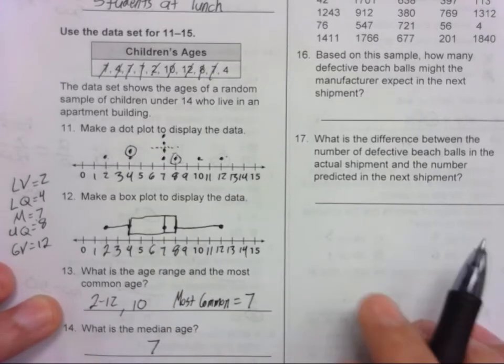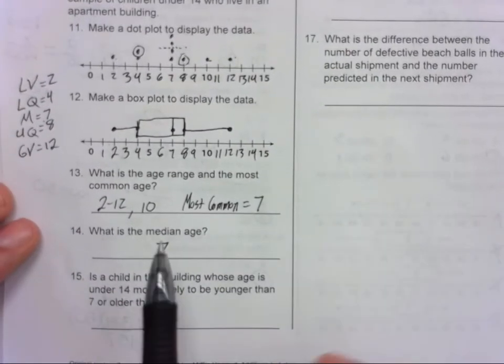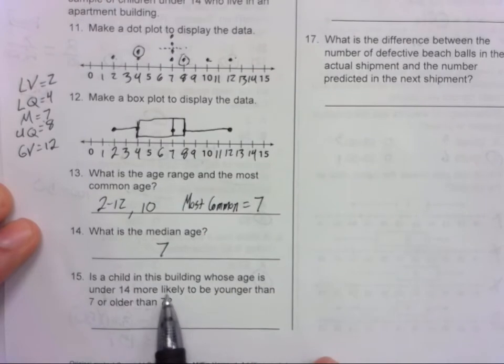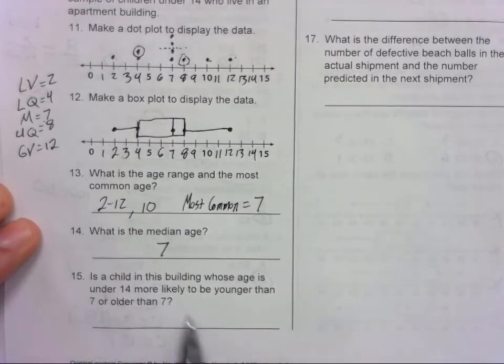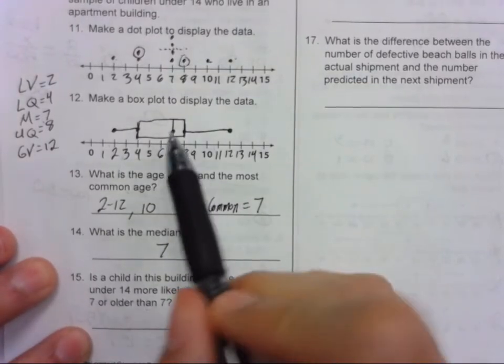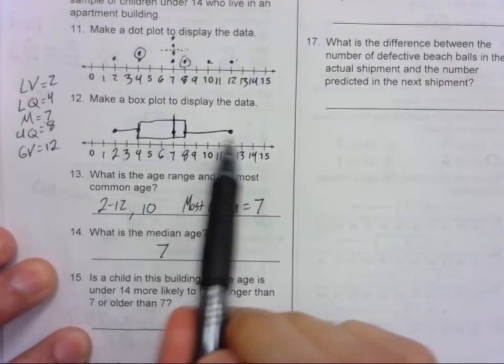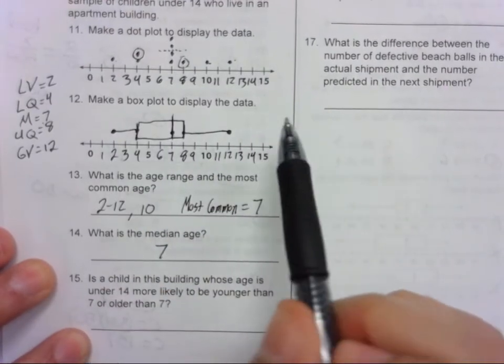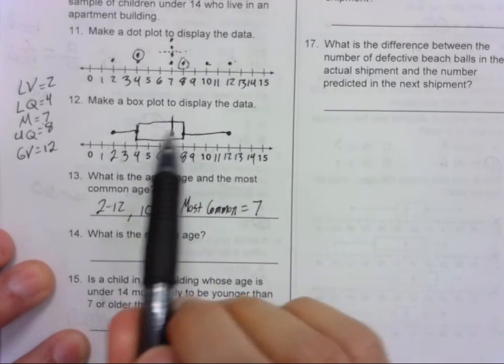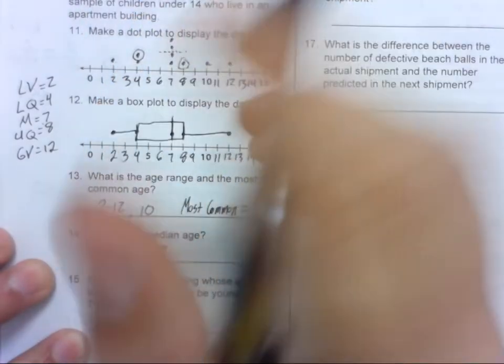Now number 15. Is a child in this building whose age is under 14, so all these kids, is he more likely to be younger than 7 or older than 7? So here's our 7 right here. Is a child more likely to be older or younger? Well, we have to go back to how much of the data is in each section. The box plot cuts the data into 4 sections. And there's 25% in each section.